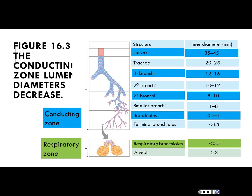Going back to the capillaries — we had arteries, arterioles, capillaries, venules, veins — exchange happens at the capillaries. Even though the capillaries have the least lumen diameter, the most dramatic change in lumen diameter happened at the arterioles. Blood enters fast, hits the arterioles, diameter drops, resistance goes up, flow drops significantly — so that by the time blood gets to the capillaries, the flow is nice and steady.